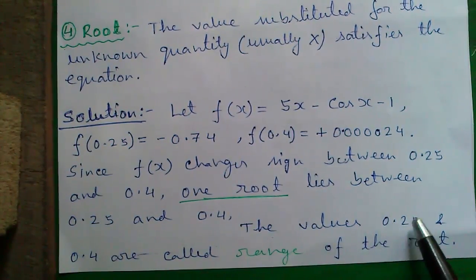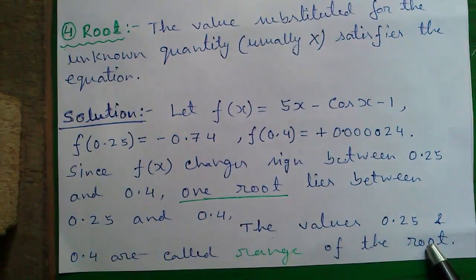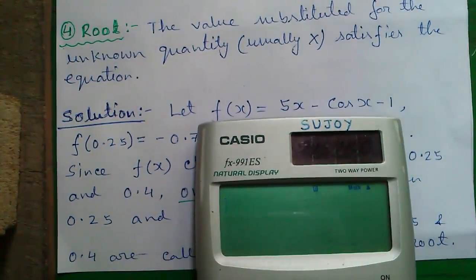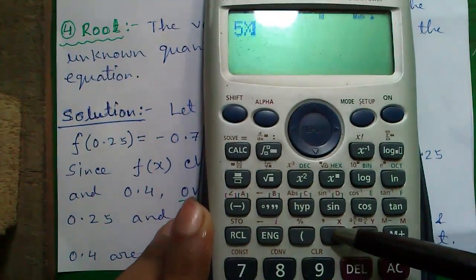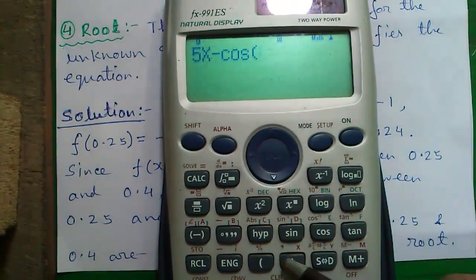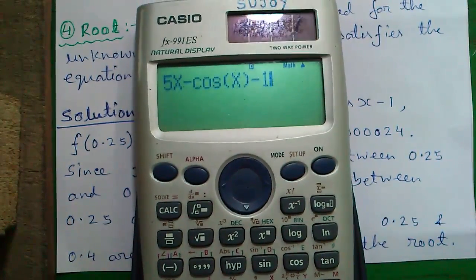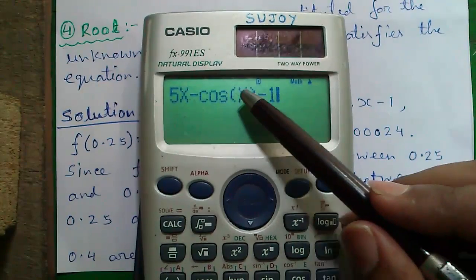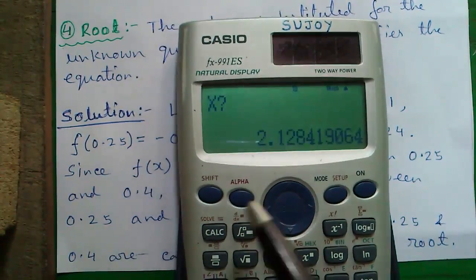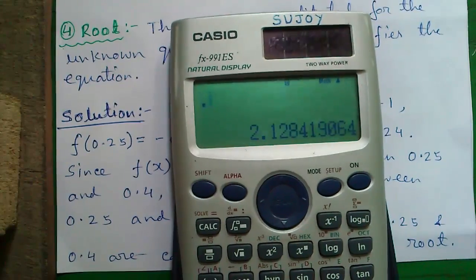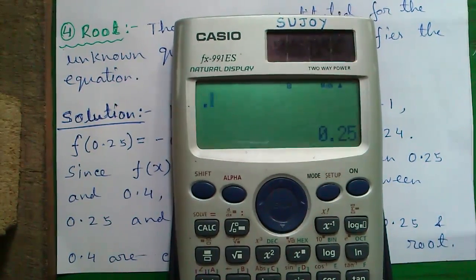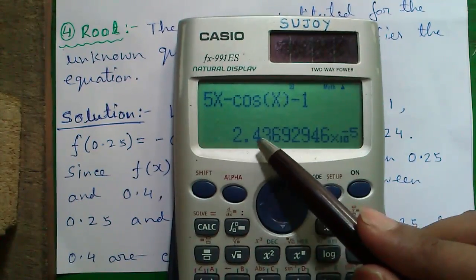The values 0.25 and 0.4 are called the range of the root. How did I get this value? I will tell you. For that, you have to program your calculator. Enter 5x plus alpha and this button. 5x minus cos x minus 1. Remember to put a right bracket after cos or you may get some error. And press this calc button. If we enter 0.25 as x and press equals to, you will get minus 0.74. Similarly, if we enter 0.4 as x, you will get 0.00000.